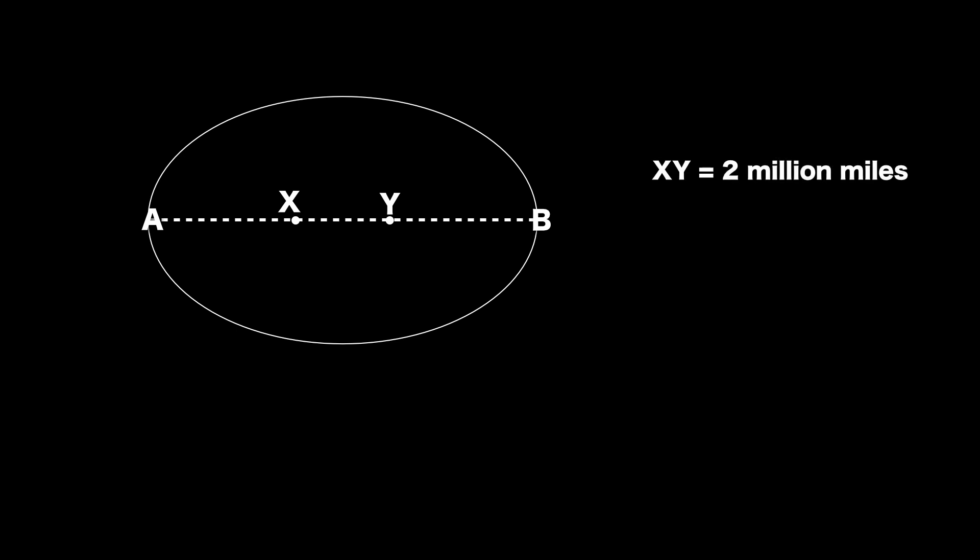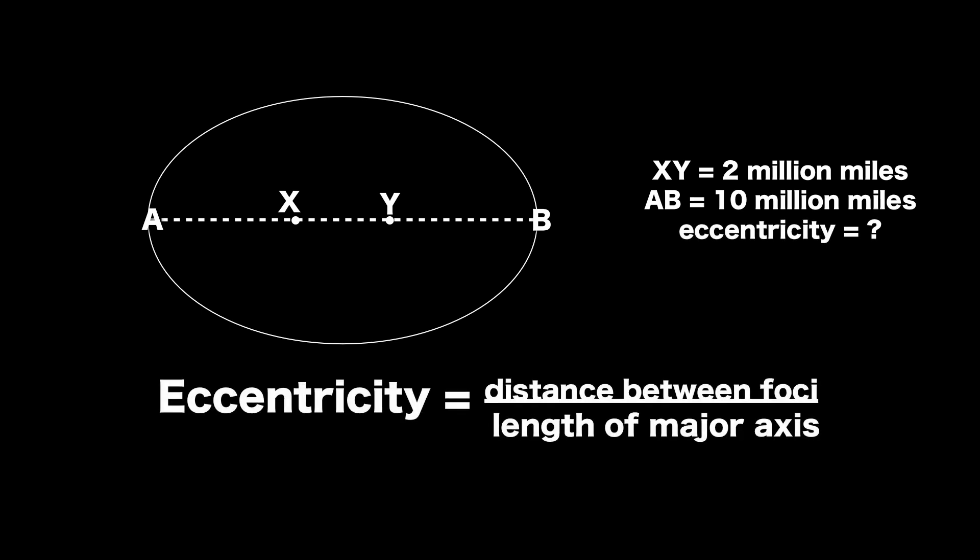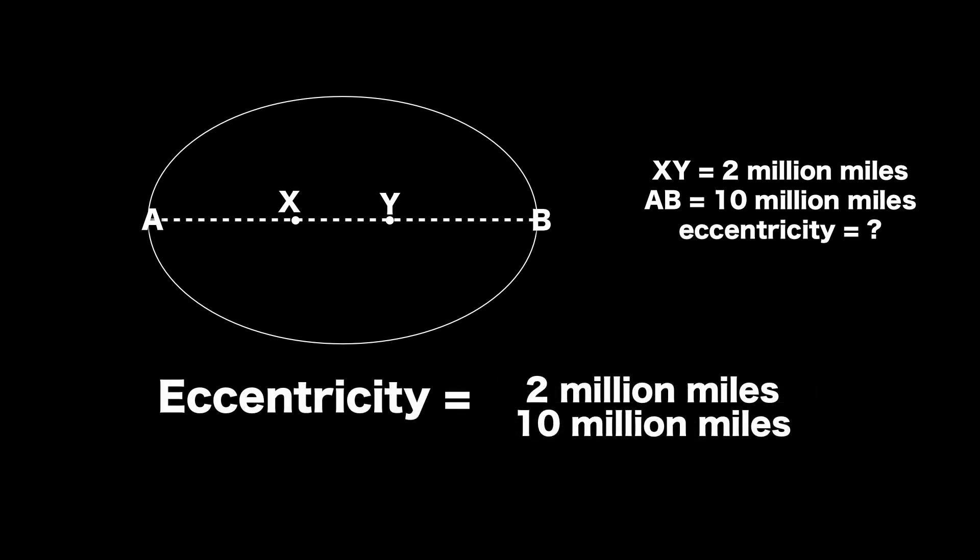So let's just put some numbers to it. Your focal distance is going to be two million miles. Your length of your major axis is ten million miles. You put two in the numerator. You put ten in the denominator. And your eccentricity is going to turn out to be 0.200.